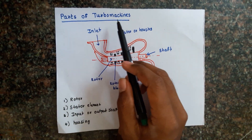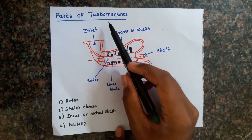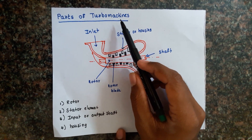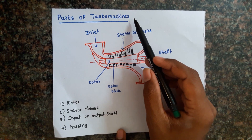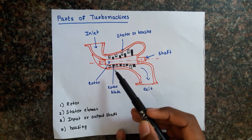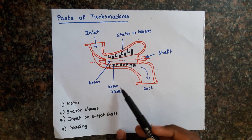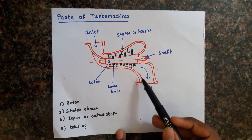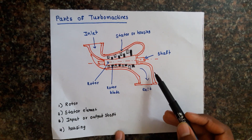Welcome to this tutorial. In this tutorial we are going to learn about different parts of turbomachines. The figure shows a cross-sectional view of a steam turbine.